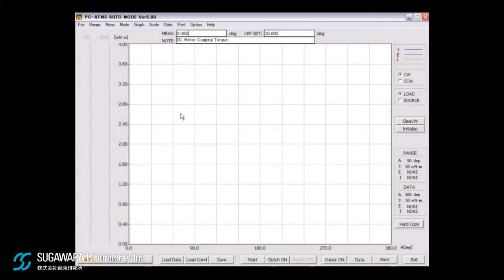After setting the angle range of testing, click the start button. The tester rotates the sample motor one rotation at one RPM and measures torque at every 0.1 degree, 3600 points.